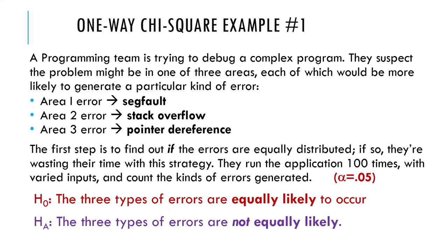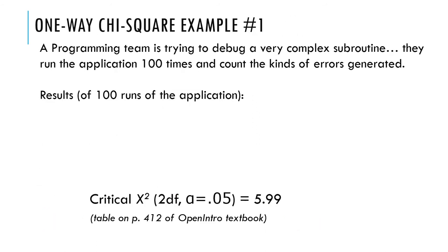The alternative is just not the null. The alternative hypothesis is always whatever the null is not. We always try and construct them so that between the two of them, they cover all of reality, or all possibilities that could happen as a result of the test. So the three types of errors are not equally likely. This is about the population of all possible errors that could be generated by the program.